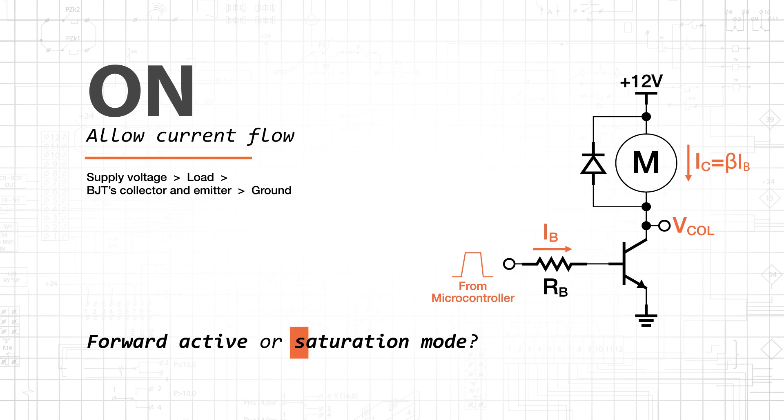Thus, we transition the BJT between cutoff mode and saturation mode, and we don't limit the input voltage or the input current in an attempt to keep the transistor in forward-active mode.